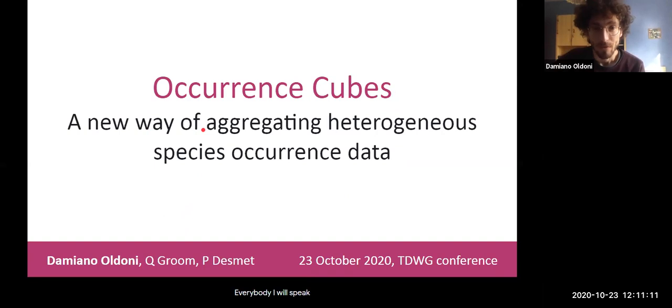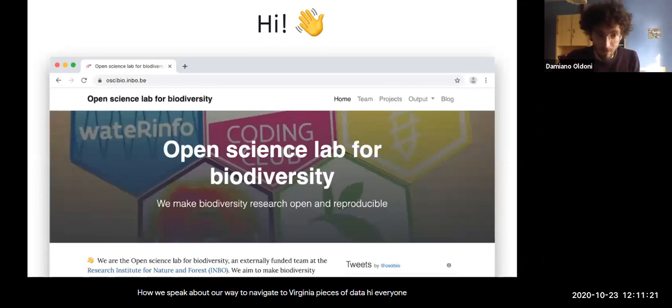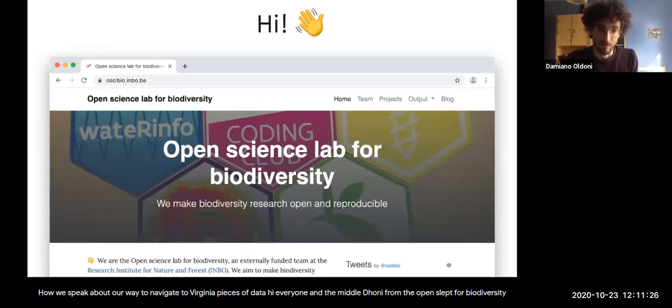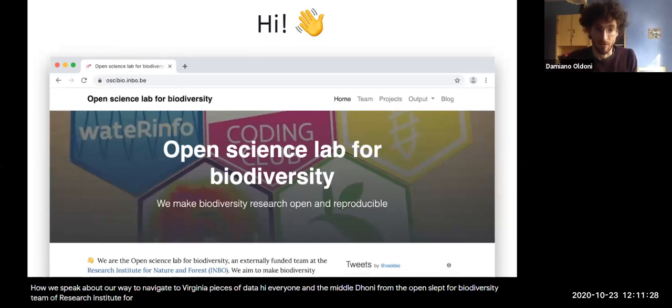I will speak a little about occurrence cubes, so a way to aggregate heterogeneous species occurrence data. Hi everyone, I'm Damiano Oldoni from the Open Science Lab for Biodiversity, externally from the team of the Research Institute for Nature and Forest in Belgium.